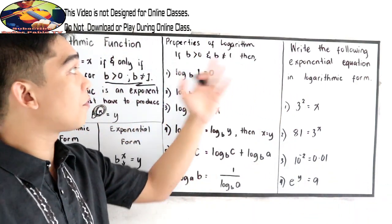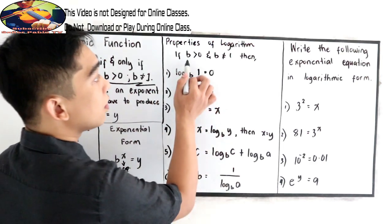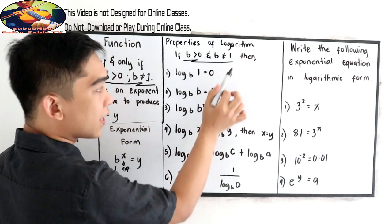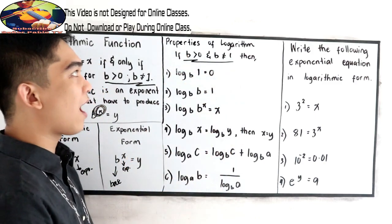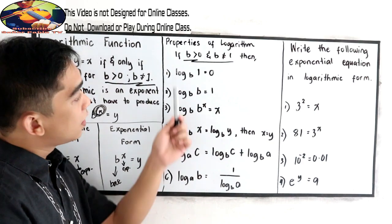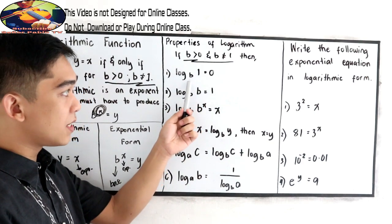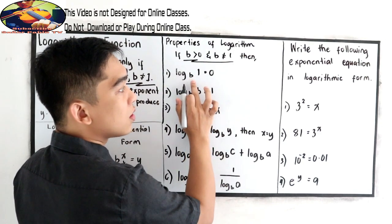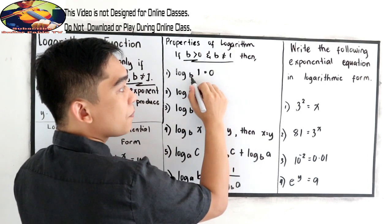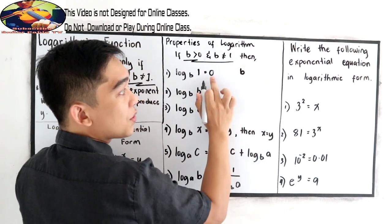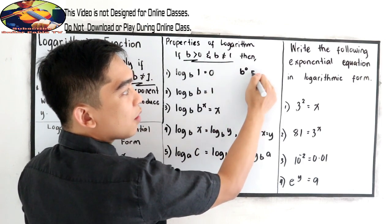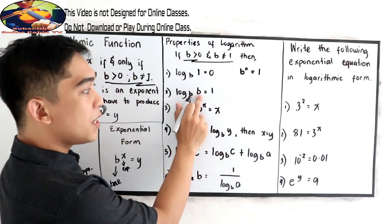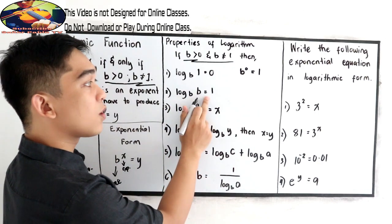Next, let us discuss the laws or properties of logarithm. Our condition is B greater than 0 and B must not equal 1. The following properties apply: Property 1 — log 1 base B is equal to 0, because if we write this in exponential form, the base raised to 0 equals 1. Property 2 — log B base B is equal to 1.